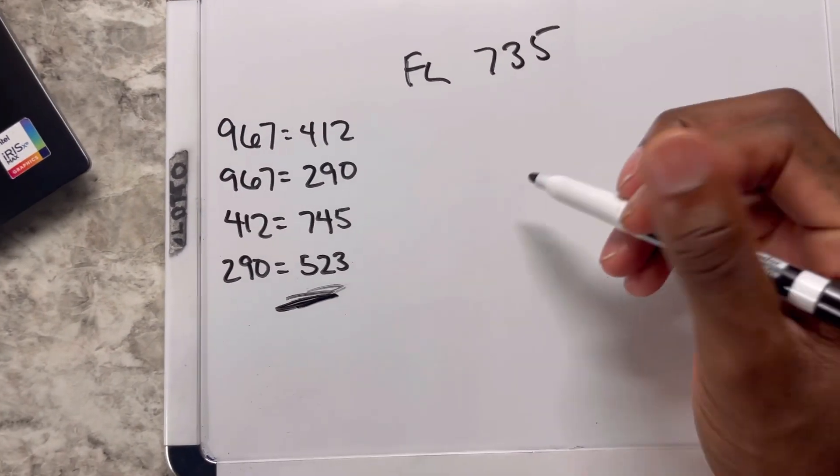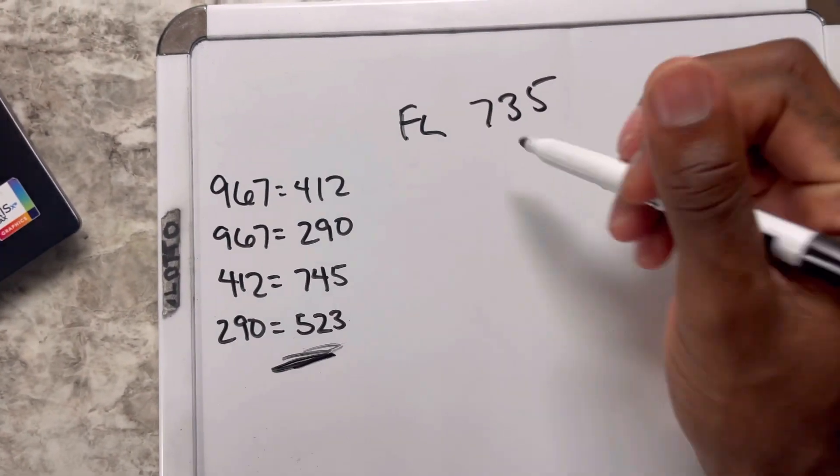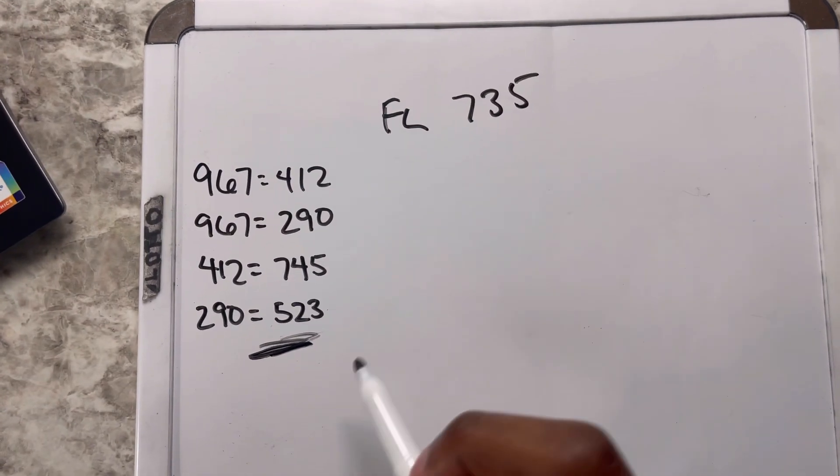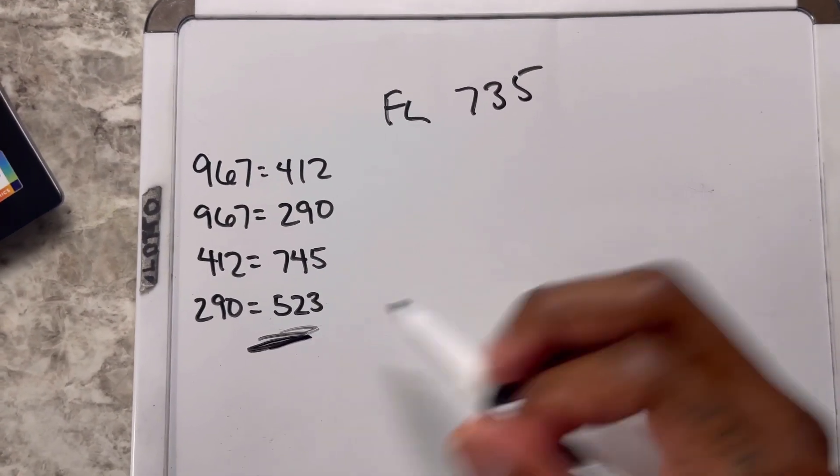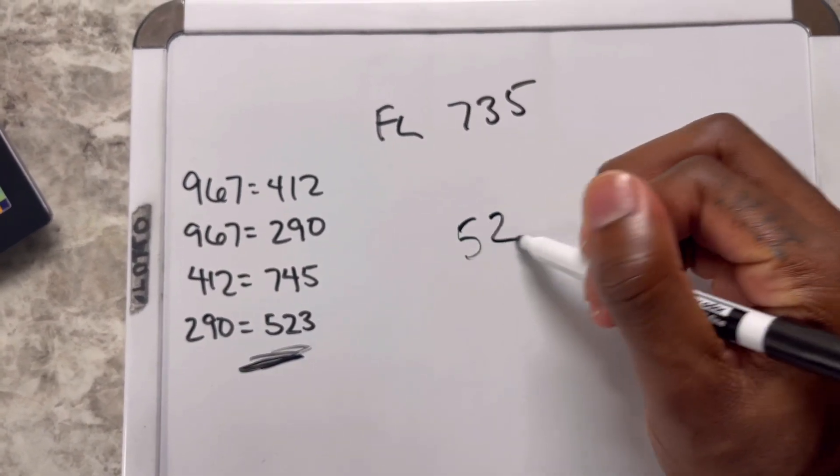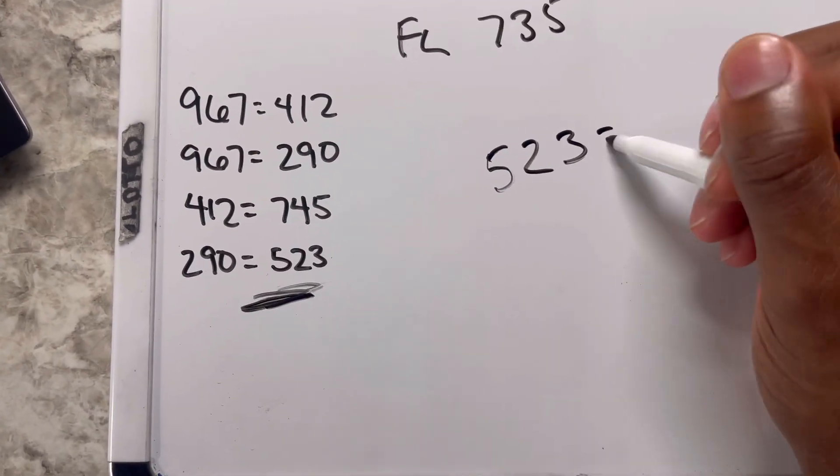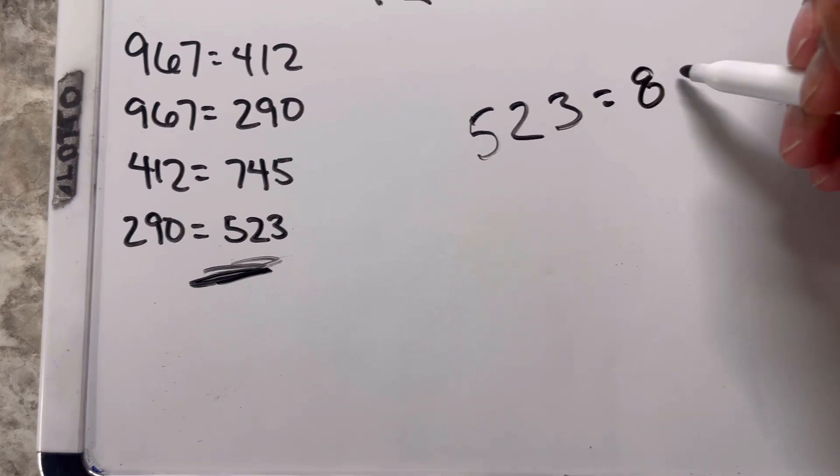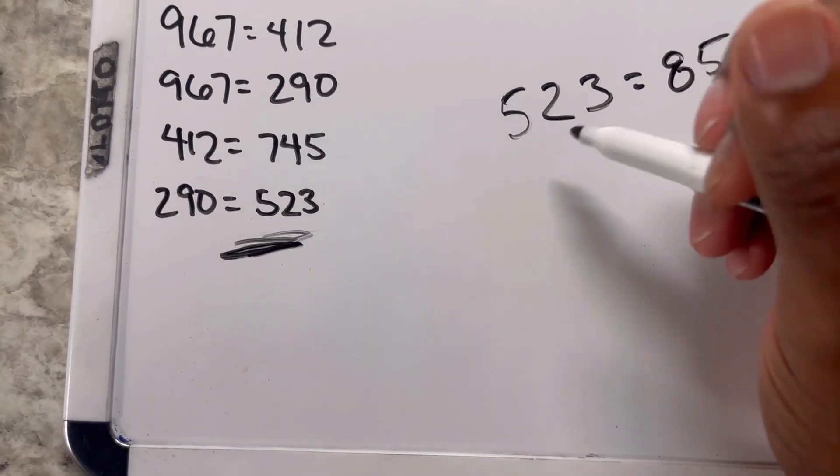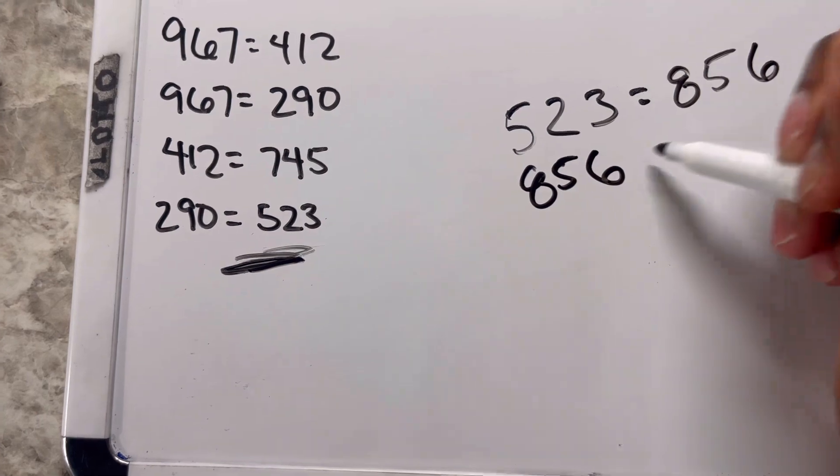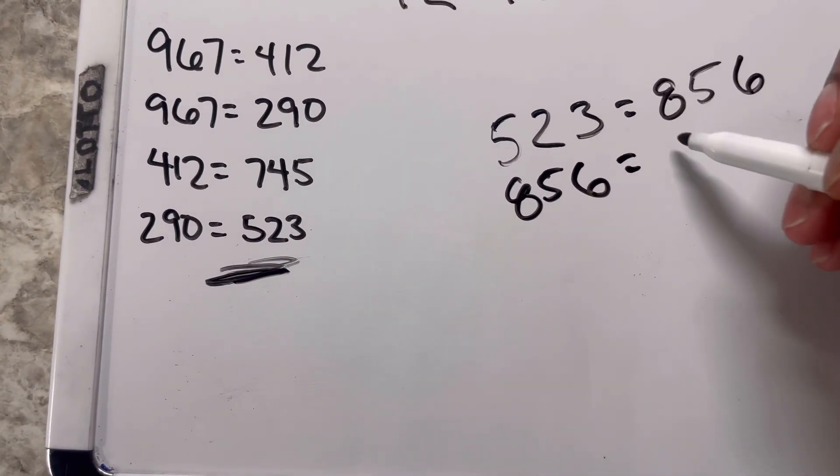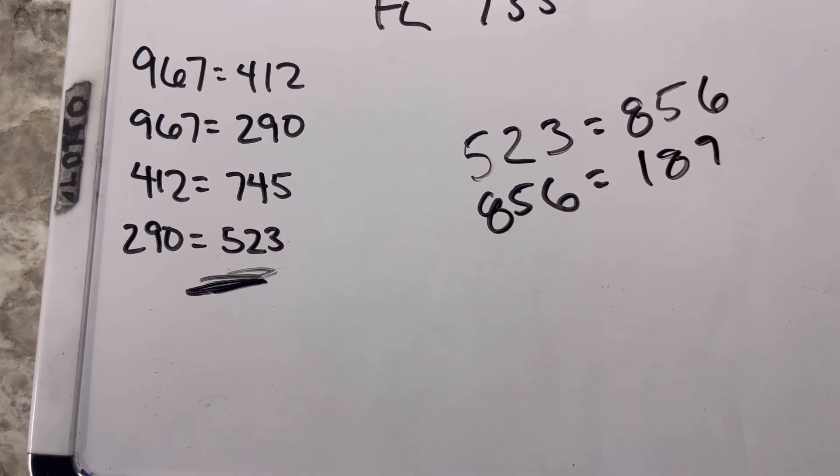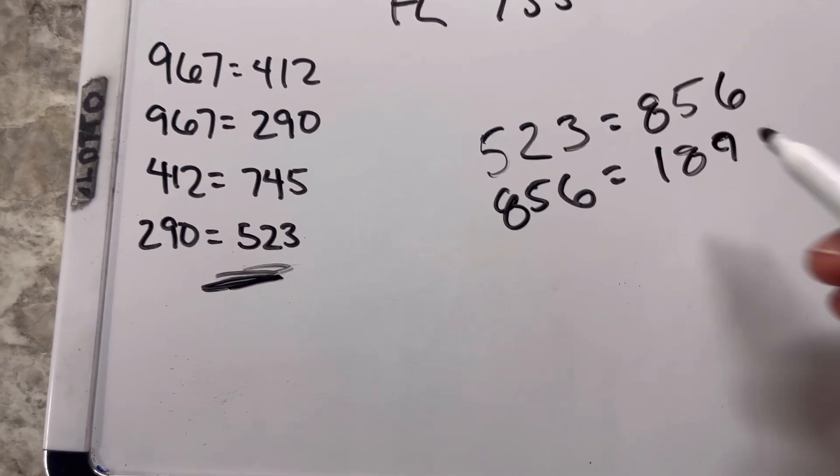Look, instead of converting that 735 into all the flip numbers, convert the closest number that was to 735, which is that 523. Convert that 523 into the flip number, which is 856, then convert 856 into a flip number, which is 189.